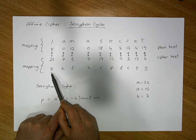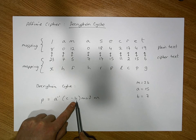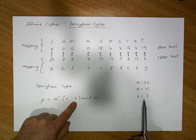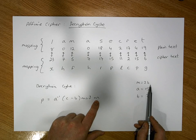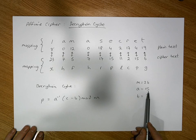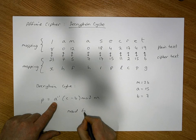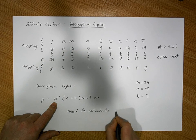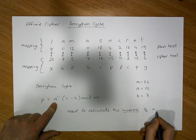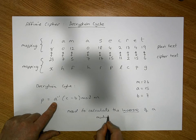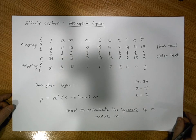To do the decryption, we take the numerical representation of a piece of cipher text. For example, we take x, which is represented as 23. The b value is simply the b value we chose in the encryption phase, which is 7. The m value is the size of our alphabet, which is 26. So c, b, and m are all given. We know a is 15, but for this algorithm we need to calculate the inverse of a modulo m.